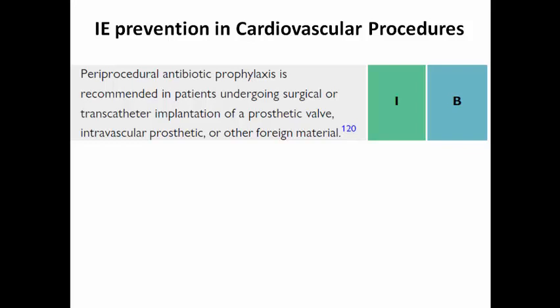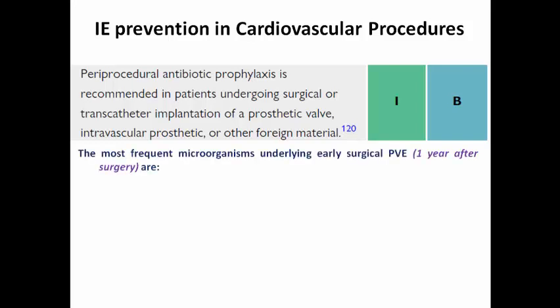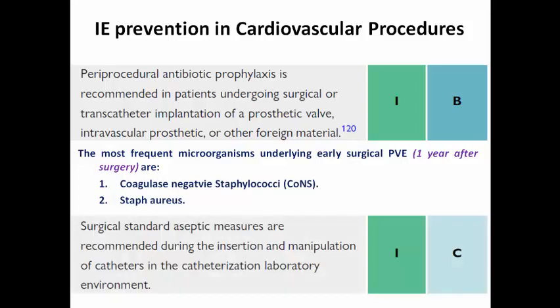Pre-procedural antibiotic prophylaxis is recommended in patients undergoing surgical or transcatheter implantation of a prosthetic valve — for example, TAVI — or any intravascular prosthetic or foreign material. The most frequent microorganisms causing early surgical prosthetic valve endocarditis within the first year after surgery are coagulase-negative staphylococci or Staphylococcus aureus. Surgical standard aseptic measures are recommended during insertion and manipulation of catheters in high-risk patients, for example a patient with a prosthetic valve undergoing coronary angiography or electrophysiological study.